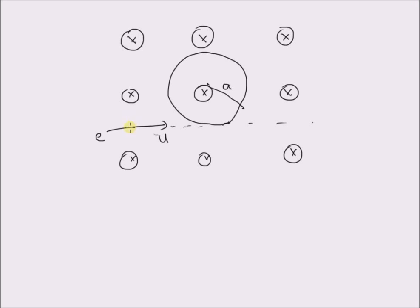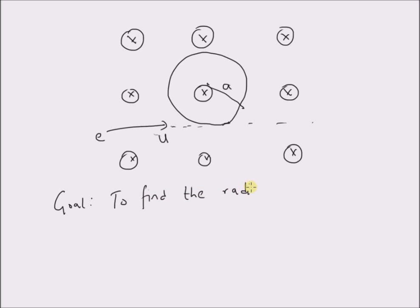When an electron or a particle enters a uniform magnetic field in a direction perpendicular to the field, the result is the particle moves in a circle with a radius a, and the magnetic force is balanced by the centripetal force. The goal is to find the radius of the circle a.